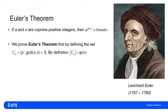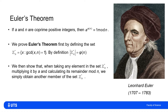I prove that by first defining the set Z_n* to be the set of all x's such that the greatest common divisor of x and n is 1. So clearly, by definition, the size of this set is phi of n — that's how we defined Euler's phi function. What I want to show is that if I take an element of the set, multiply it by a, and work out its remainder mod n, then it's also in the set. Multiplying by a and taking the remainder can't add any new elements; it just maps to another element already in Z_n*.